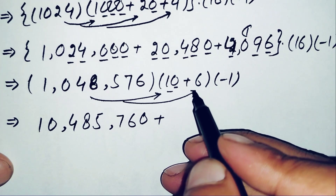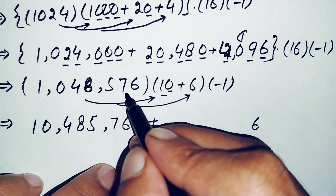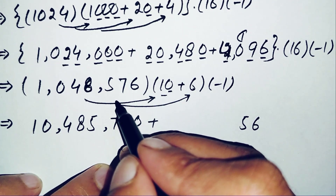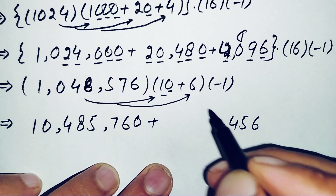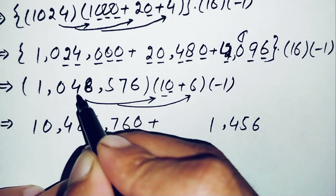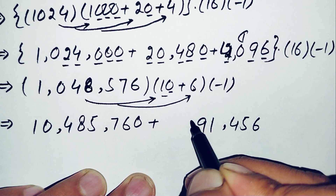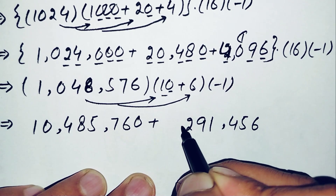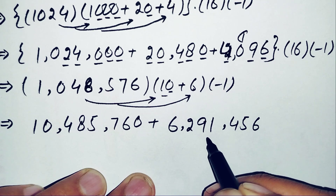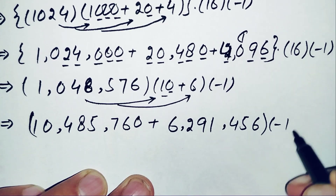Multiplying 1,048,576 by 6: 6×6=36, write 6 carry 3; 6×7=42, plus 3=45, write 5 carry 4; 6×5=30, plus 4=34, write 4 carry 3; 6×8=48, plus 3=51, write 1 carry 5; 6×4=24, plus 5=29, write 9 carry 2; 6×0=0, plus 2=2; 6×1=6. So 1,048,576 times 6 equals 6,291,456.